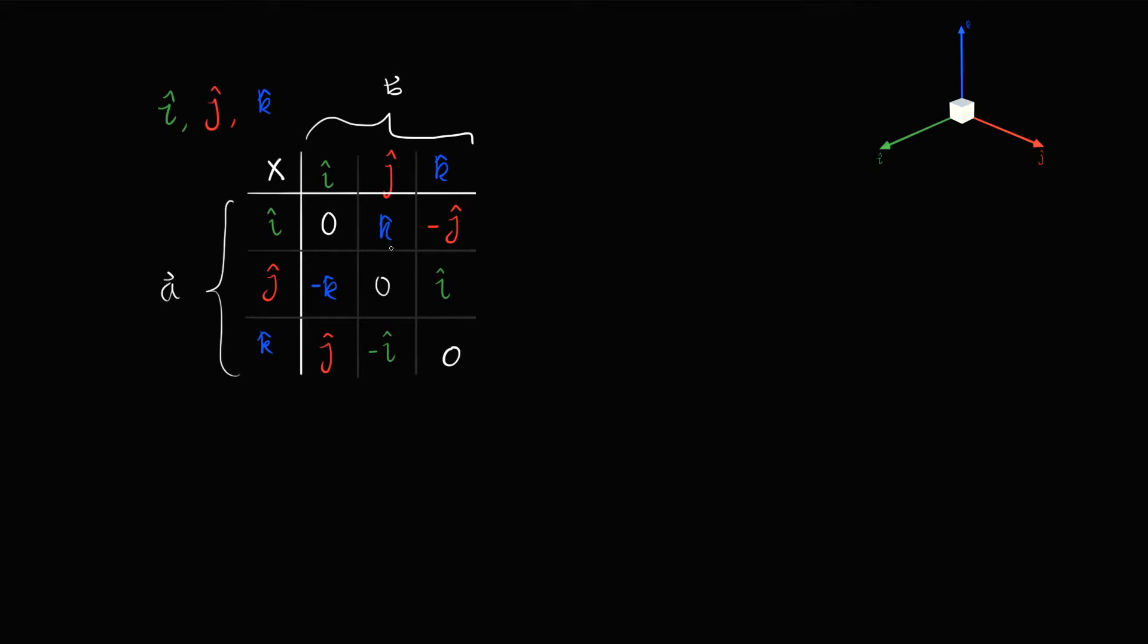Now we know how the cross product works between any two basis vectors. So if we write any general vector A, we can write this as some A1 times I hat plus A2 times J hat and A3 times K hat. We can also do the same for any vector B.